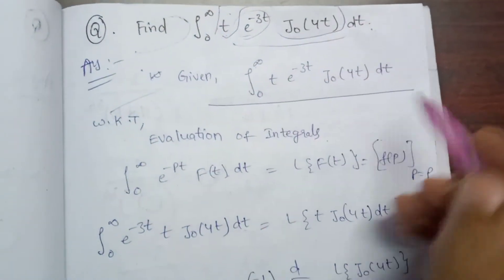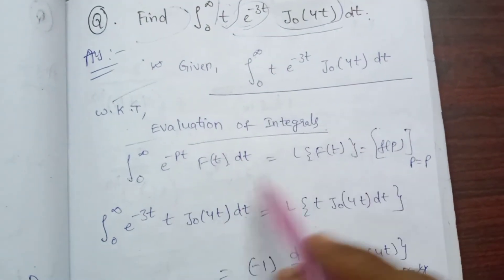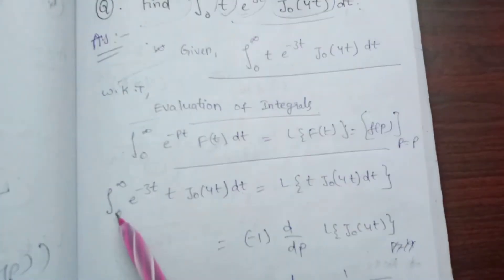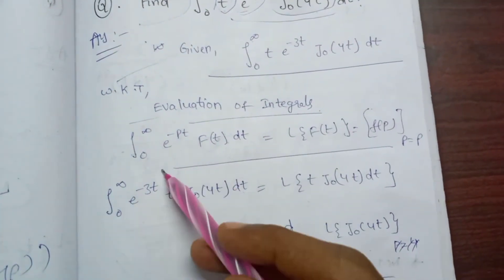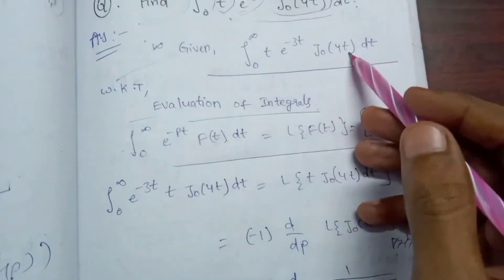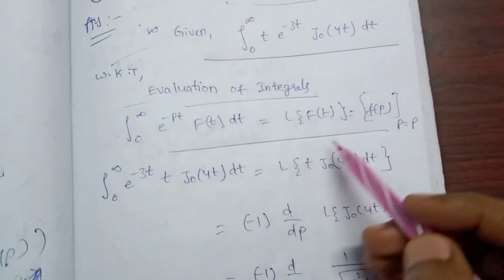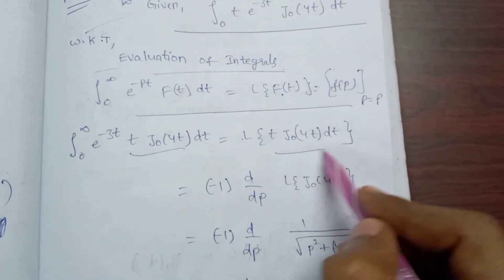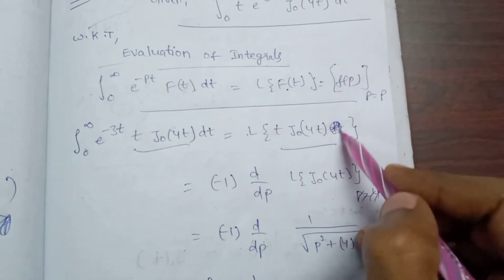The answer is given. We know the evaluation of integrals formula. The integral from 0 to infinity of e^(-3t) J0(4t) dt equals this amount. So if you want to find the integral from 0 to infinity of e^(-3t) J0(4t) dt.